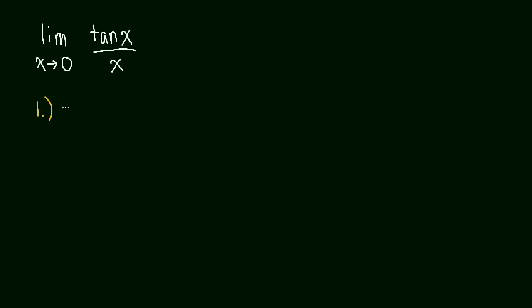So first step, when I see tan, it sometimes makes me want to rewrite it as sine over cos. Sine x over cos x, because we know that that's really what it is. And so this is all over x. When I see a fraction over a fraction, I definitely want to simplify that. So I'm going to do that.